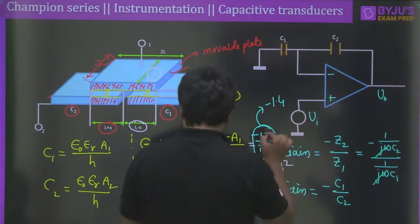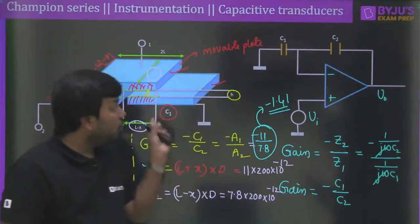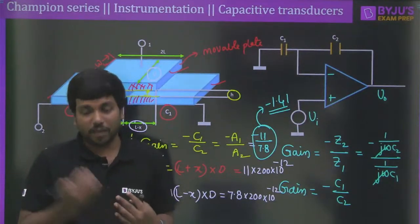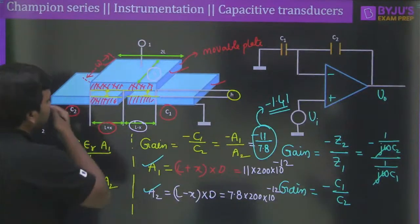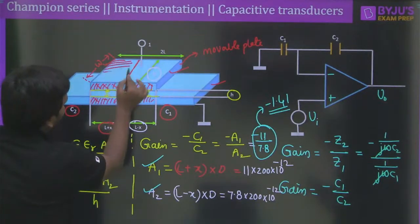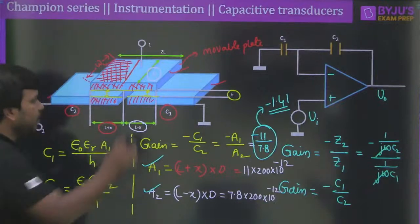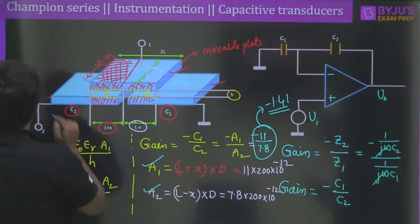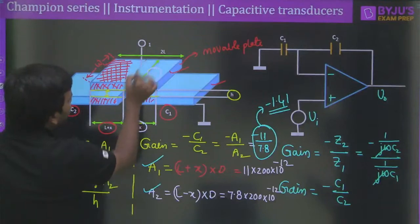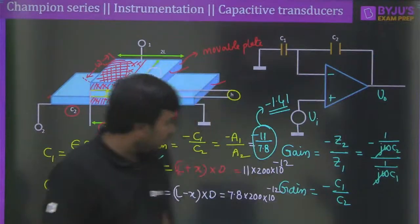11 / 7.8 ≈ 1.41. Therefore the gain of the system is −1.41. This is the final answer for Question 4. The key insight is recognizing that the overlapping areas change as L ± X, and the gain of the inverting op-amp circuit with capacitive feedback is simply the ratio of the two overlapping areas.